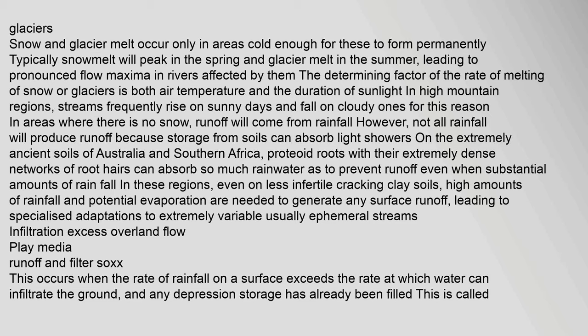The determining factor of the rate of melting of snow or glaciers is both air temperature and the duration of sunlight. In high mountain regions, streams frequently rise on sunny days and fall on cloudy ones. In areas where there is no snow, runoff will come from rainfall. However, not all rainfall will produce runoff because storage from soils can absorb light showers. On the extremely ancient soils of Australia and southern Africa, proteoid roots with their extremely dense networks of root hairs can absorb so much rainwater as to prevent runoff even when substantial amounts of rain fall.